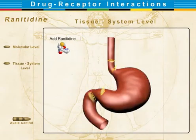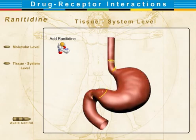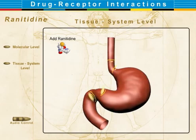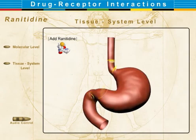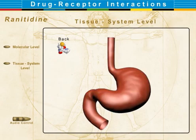Here we see pain originating from the duodenal end of the stomach, as well as the upper esophageal end — GERD. This pain from acid secretion is resolved by using ranitidine.